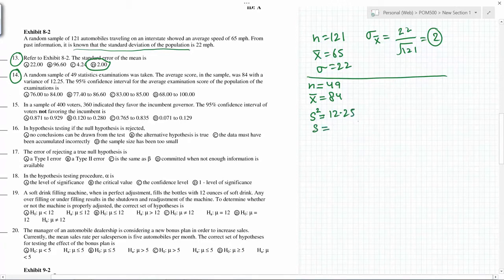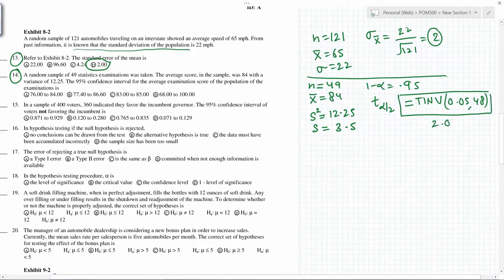n equals 49, average X bar equals 84, variance s squared equals 12.25, which means standard deviation is square root of that, which is 3.5. 1 minus alpha equals 0.95. Because this is a sigma not known case, we need t alpha by 2. You can get this by T INV - 49 minus 1 equals 48 degrees of freedom - you get 2.0106. So 95 percent confidence interval will be the average 84 plus minus - if you do the math - 1.